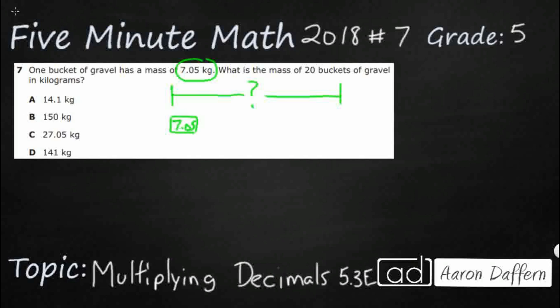This is one bucket, and there's going to be 20 of them—20 times. That lets us know that we need to multiply these two numbers.